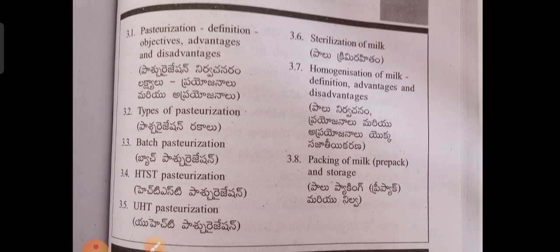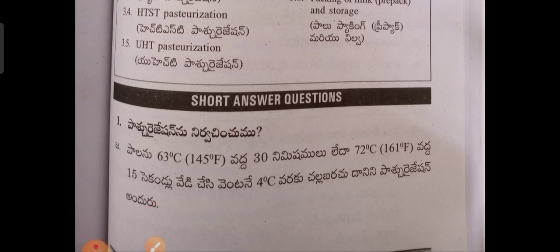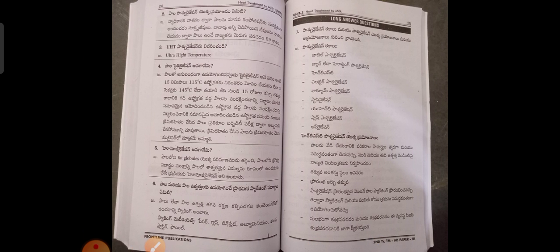Unit 3: Heat Treatment to Milk. Sub-topics include Pasteurization at 63 degrees Centigrade for 30 minutes, or 145°F, and high-temperature short-time (HTST) at 161°F for 15 seconds, with cooling to 4 degrees. Also covered is UHT Pasteurization.